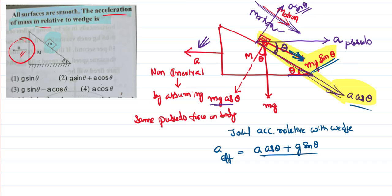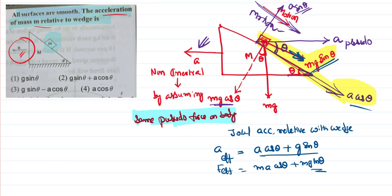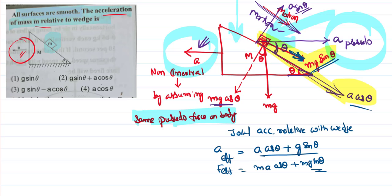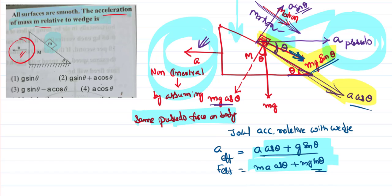If you want the net force, you can multiply by m: m·a·cosθ + m·g·sinθ. To summarize, we employed the important concept of pseudo force. We use pseudo force whenever we study a body in a frame that is itself accelerating, making it a non-inertial frame. To nullify that effect, we imagine an equal acceleration acting in the opposite direction on the body. This makes the frame effectively inertial, and we can then apply Newton's laws of motion normally. Thank you for watching.